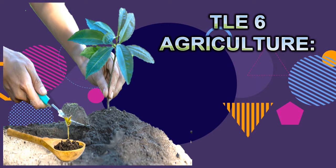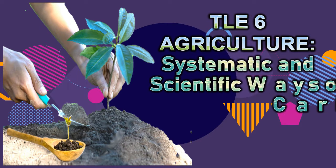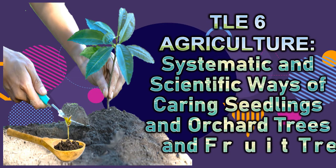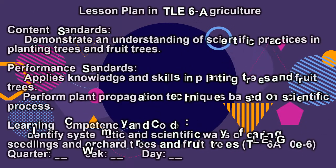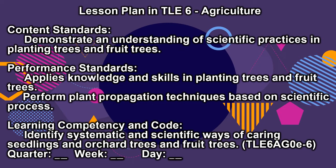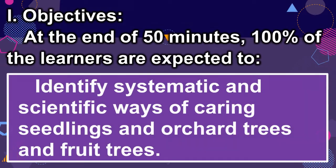TLE 6 Agriculture: Systematic and scientific ways of carrying seedlings and orchard trees and fruit trees. Objective: At the end of 50 minutes, 100% of the learners are expected to identify systematic and scientific ways of carrying seedlings and orchard trees and fruit trees.